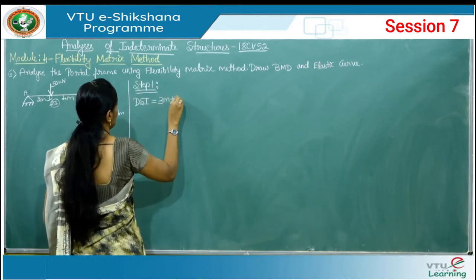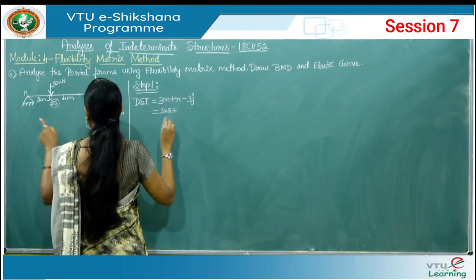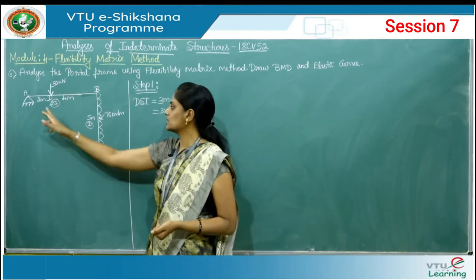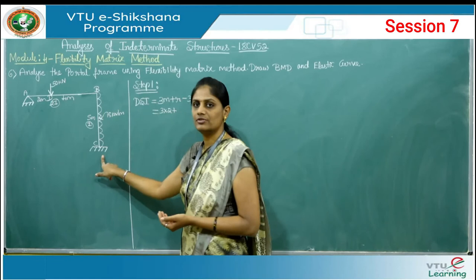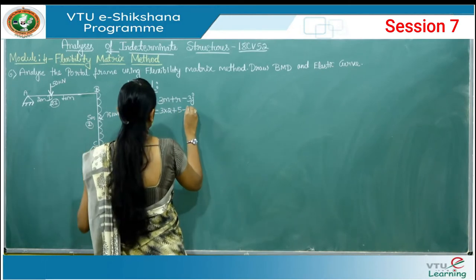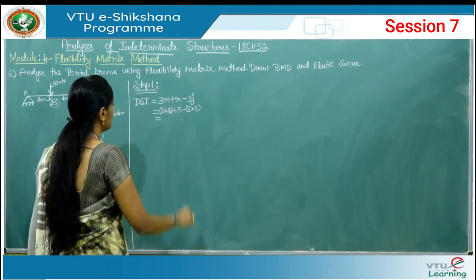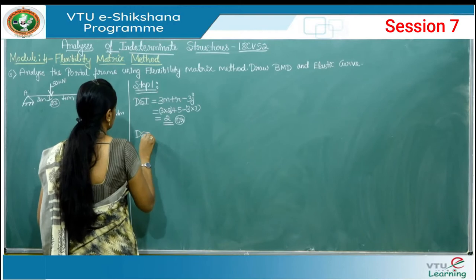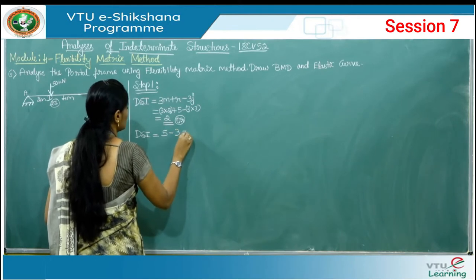In step number one, we need to find the total degree of static indeterminacy. We use the formula 3m + r − 3j. Here the number of members is 2. In previous problems both supports were fixed, but here one support is hinge and one is fixed. At A (hinge support) reactions are 2, and at C (fixed support) reactions are 3, giving r = 5. With 3 joints: 3×2 + 5 − 3×3 = 6 + 5 − 9 = 2. So the degree of static indeterminacy is 2.